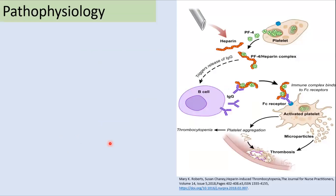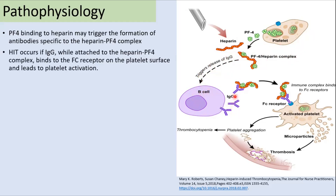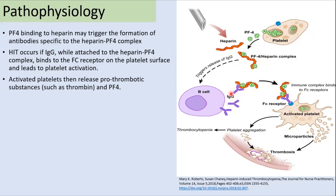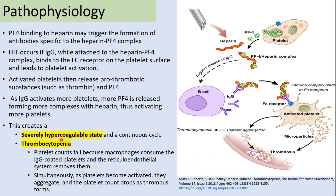Regarding the pathophysiology, platelet factor 4 (PF4) released by platelets combines with heparin to form the PF4-heparin complex, which triggers the release of immunoglobulin. This immunoglobulin then combines with the PF4-heparin complex, and when this complex binds to the Fc receptor on platelets, it leads to platelet activation. Activated platelets release microparticles, more PF4, and procoagulants like thrombin, ultimately leading to activation of the coagulation pathway and platelet aggregation, resulting in a severe hypercoagulable state.